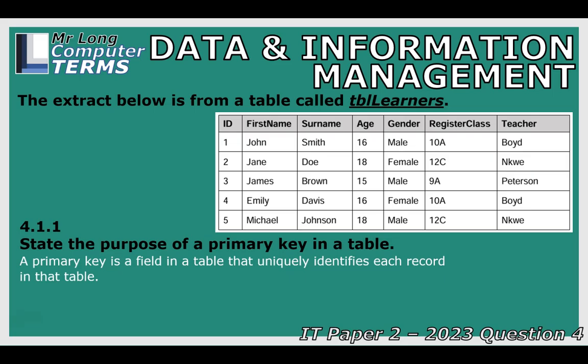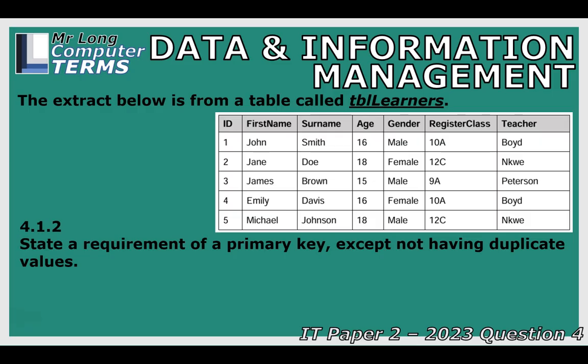While we're on the topic of primary keys, there are two rules when choosing a field suitable for a primary key. Question two asks what requirement a primary key has except for not having duplicate values. The two rules are: first, it must be unique — no duplicate values; and second, it cannot be blank or null. It must always have a value, and that value must be unique.